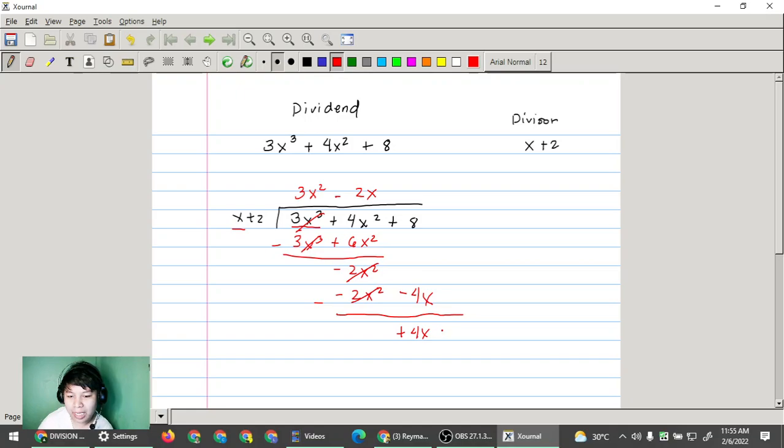We'll just bring down the 8 over there. Niisip ko ay 4, positive 4. 4x, yun, positive 8. So if we will subtract this, cancel, cancel, cancel. It will become 0. So kapag 0 na yung nasa dulo, yun na yung ending ng ating division. This is the long method.